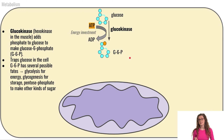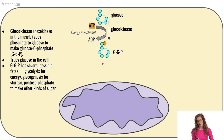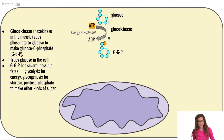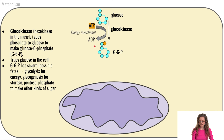This is an important step because glucose-6-phosphate is now stuck inside the cell — it traps glucose in the cell. Without the phosphate, glucose can move in and out through the GLUT transporter. But once glucose has this phosphate attached to it, it is trapped inside the cell. So the function of glucokinase is to add a phosphate onto glucose and trap it inside the cell.